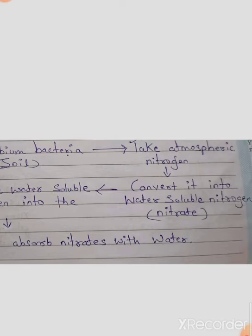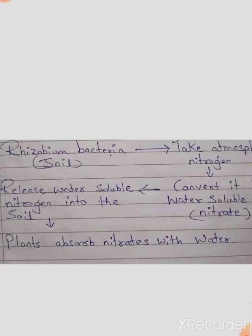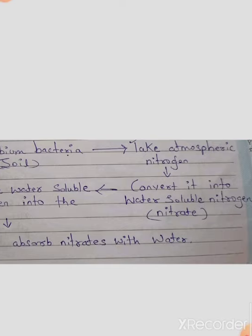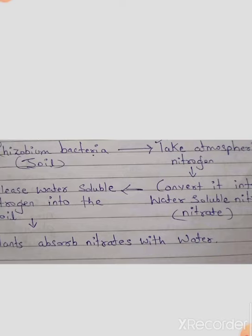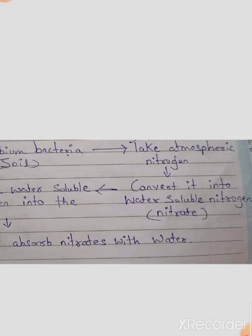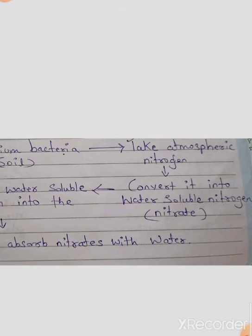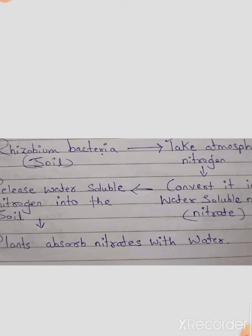This bacteria takes atmospheric nitrogen. The plants themselves don't absorb nitrogen directly from the atmosphere. Instead, the rhizobium bacteria present in the soil absorbs nitrogen from the atmosphere. Then, the rhizobium bacteria converts this atmospheric nitrogen into water-soluble nitrogen, which we call nitrate. So rhizobium bacteria take atmospheric nitrogen and convert it into water-soluble nitrogen known as nitrate.